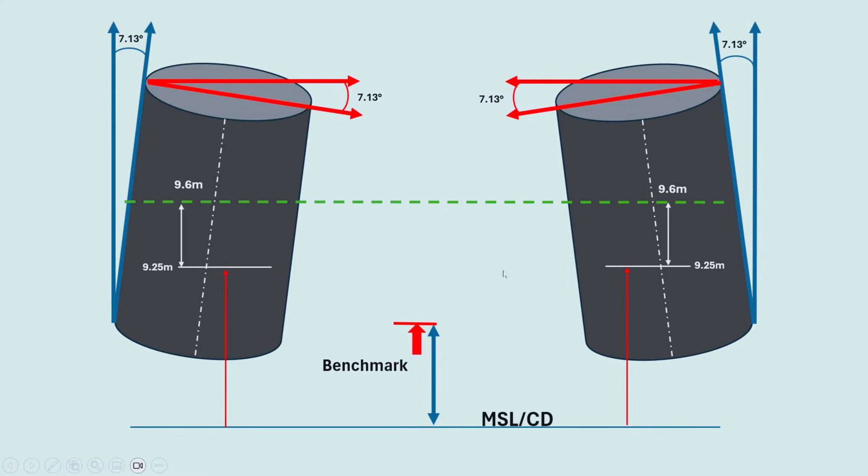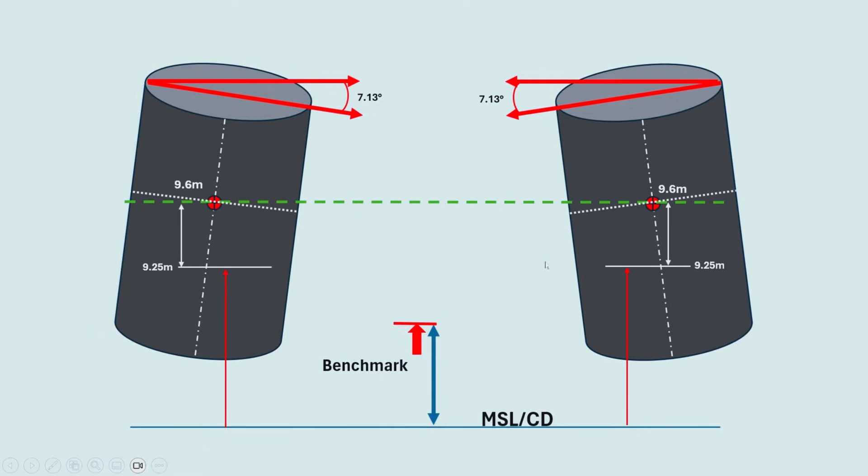Next, surveyors will use the total station to measure the distance from leg center to leg center at that same 9.6 meter elevation. Let the client know the measured distance. They may do some adjustment. Once the distance is confirmed, the client will mark the high point and the low point on the jacket leg at the same 7.13 degrees angle on 9.6 meter elevation.